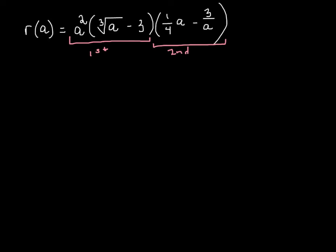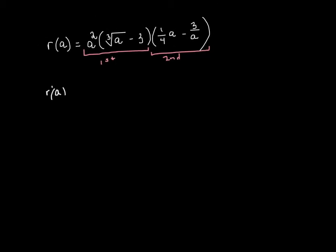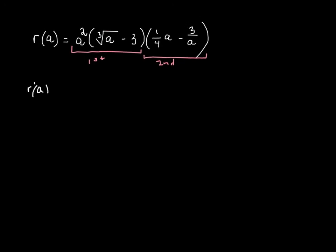I'm going to underline what I see as my first and my second. When I say the first times the derivative of the second, that's not going to be the place where I run into trouble. But the second times the derivative of the first is going to be a little bit different. I only see a couple of places where I might want to rewrite. On top, the cubed root of a — I know that's going to be a raised to the one-third power. And over here where I have three over a, that's going to be minus three a to the negative one power. So my rewrites are there in pink.